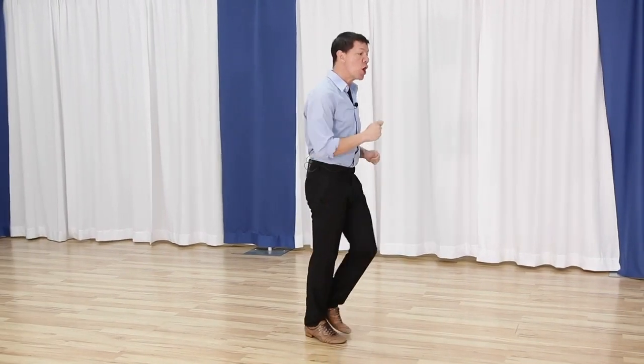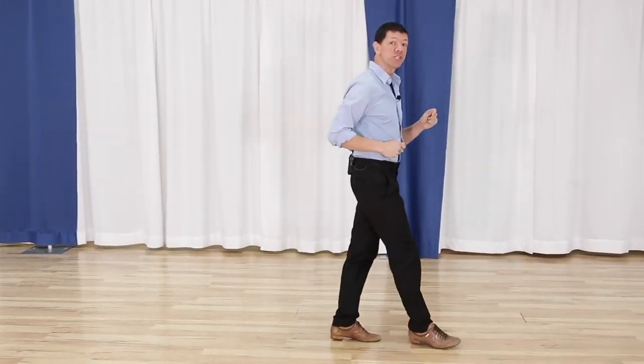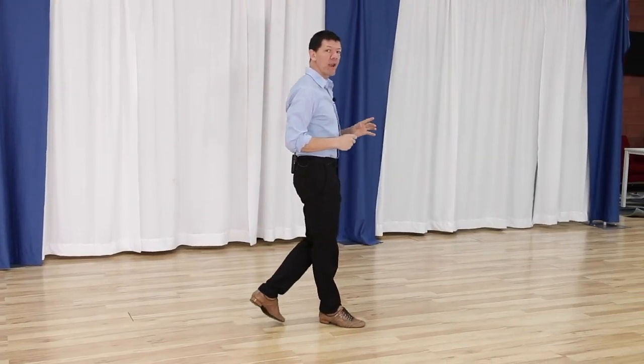Now in two-step, we primarily start with the quick, quick, not the slow, slow of foxtrot. So progressive two-step would look like this: quick, quick, slow, slow, and quick, quick, slow, slow. But I want you to see as the evolution happened why you might see some of the shuffly different versions of two-step.